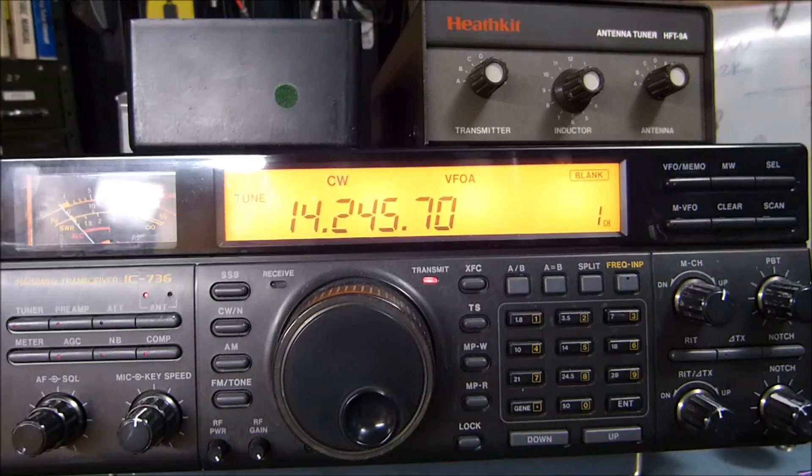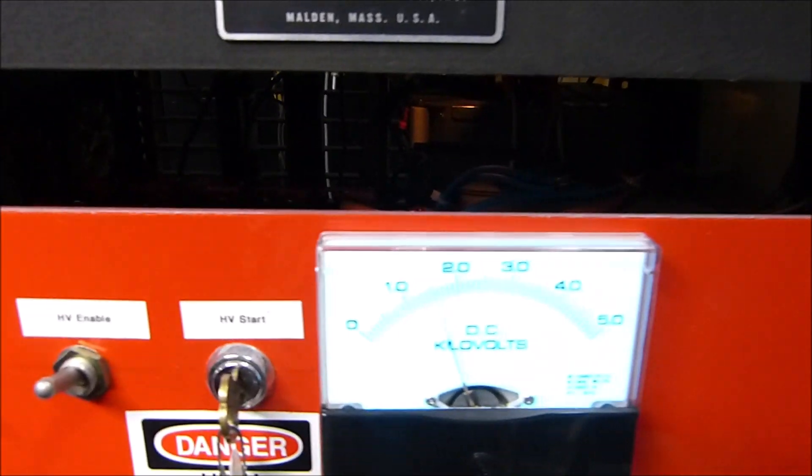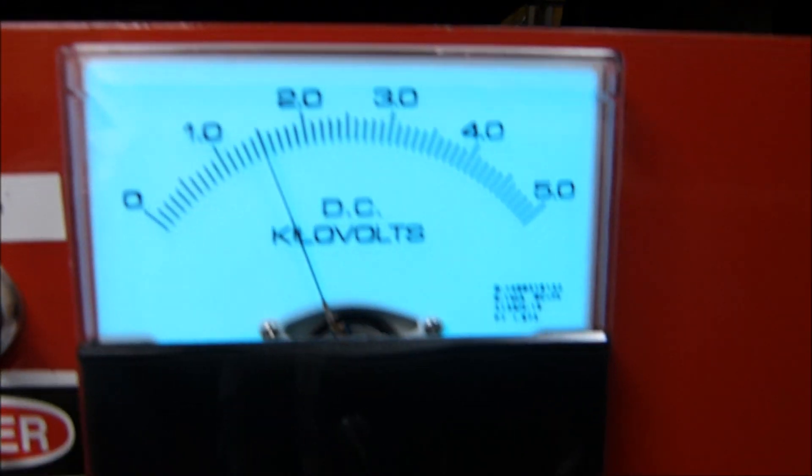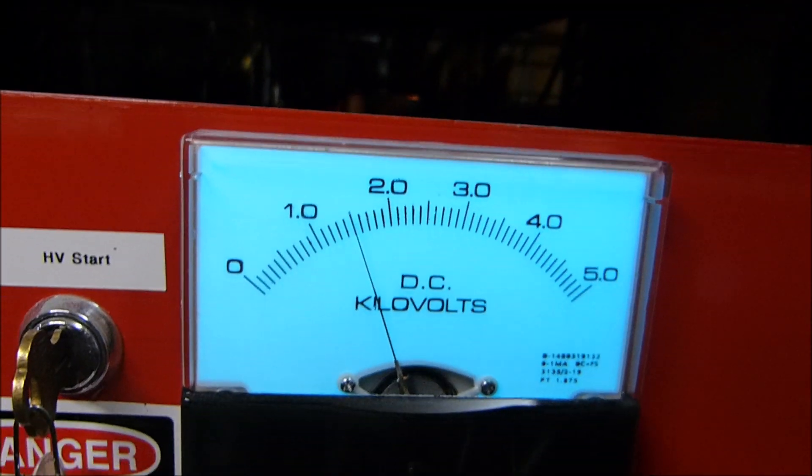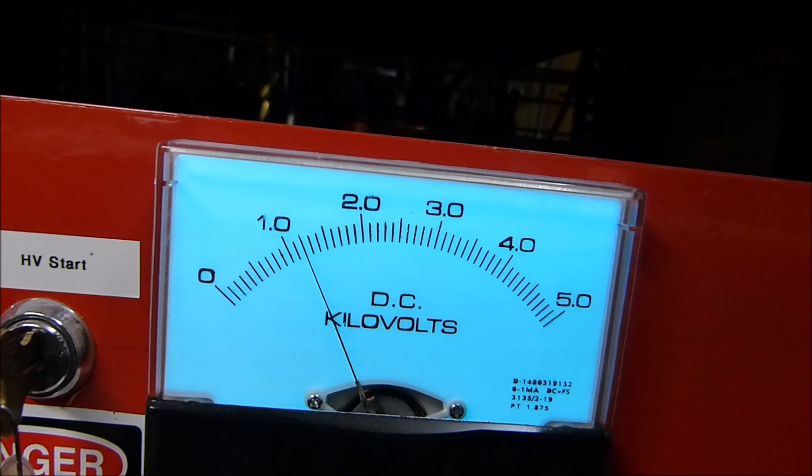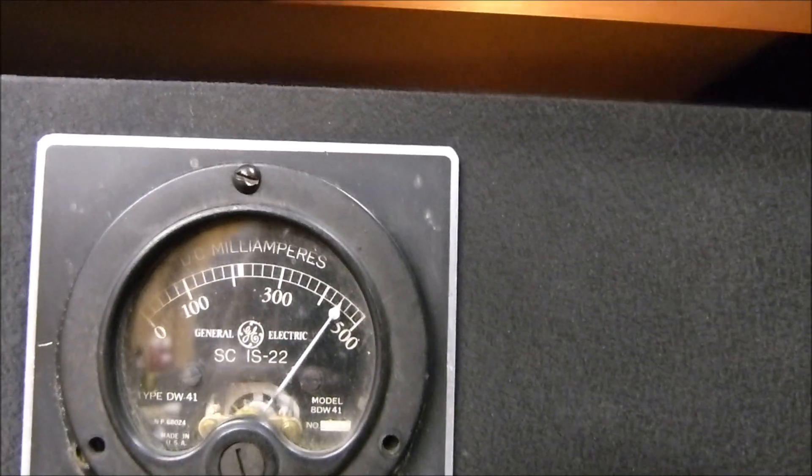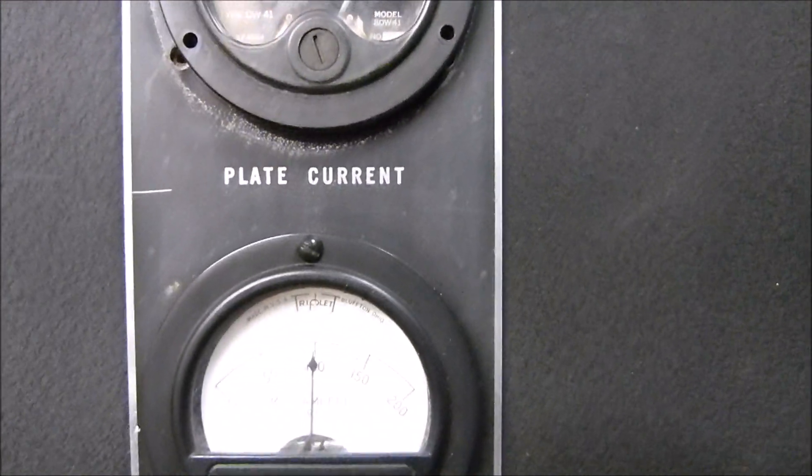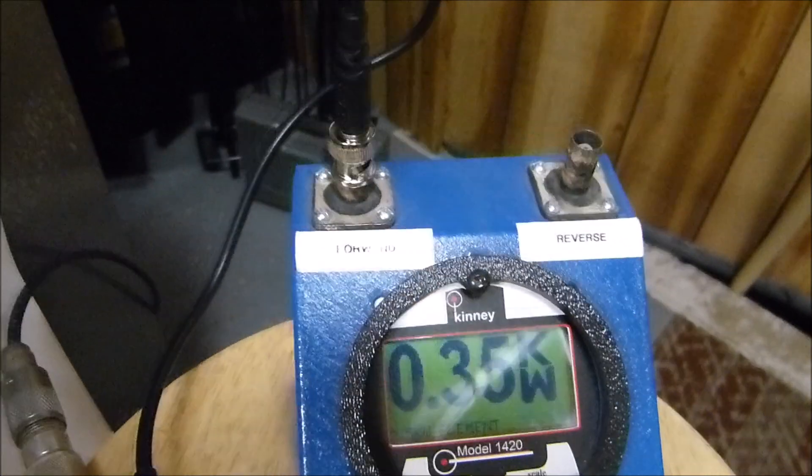It's actually on now. Idling voltage, I want to show you, is 1500. Here's key down: 1200, 440 milliamps. That's input grid current of 100 milliamps, output 350 watts.